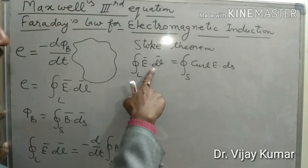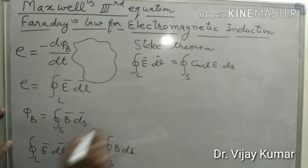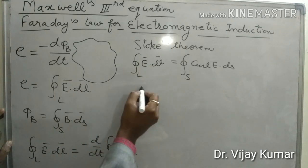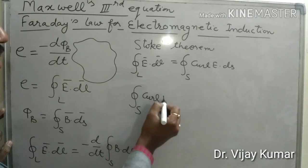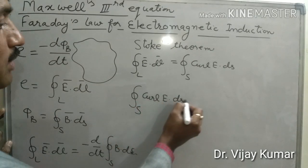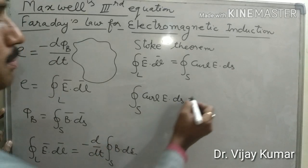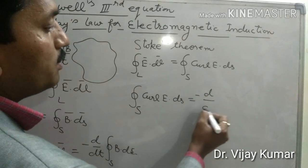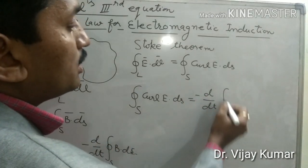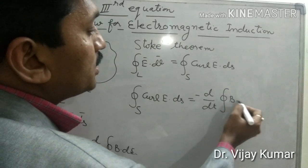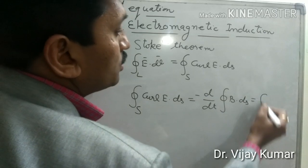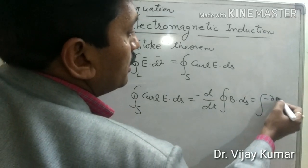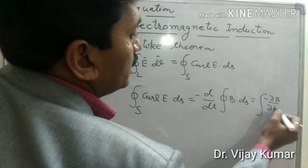Putting the value of the line integration of the electric field into this equation, it becomes: the surface integration of the curl of the electric field equals minus d/dt of the surface integration of the magnetic field, which we can also write as minus ∂B/∂t ds.